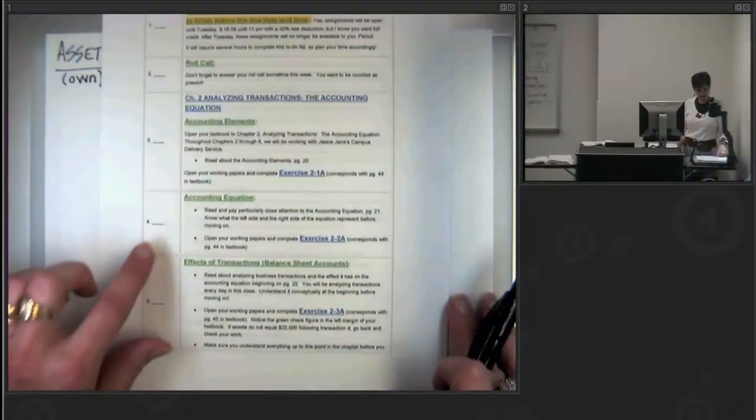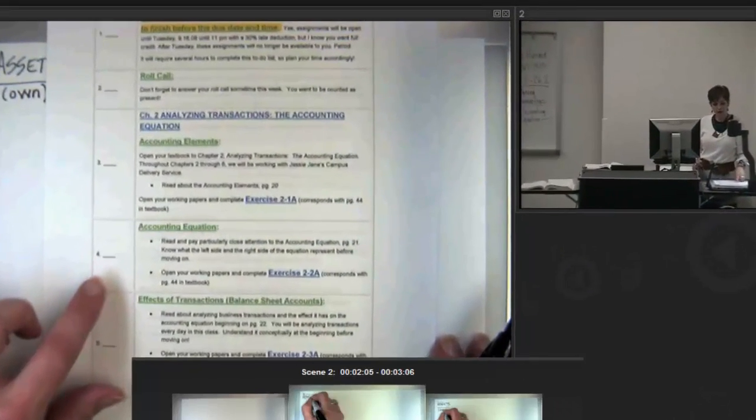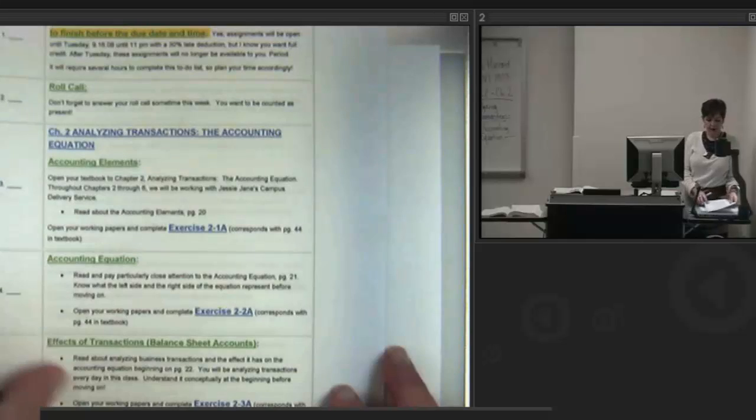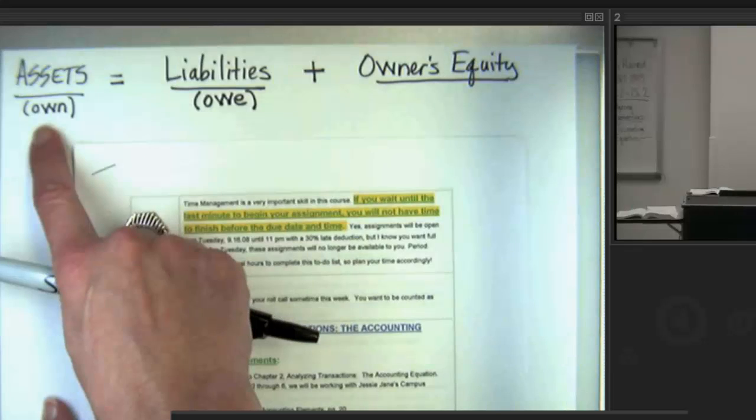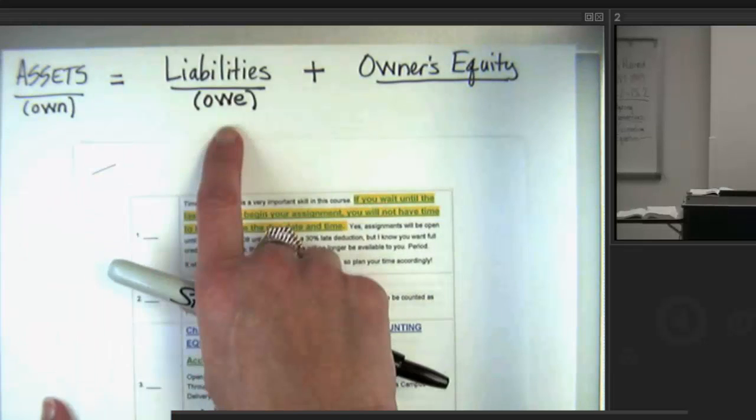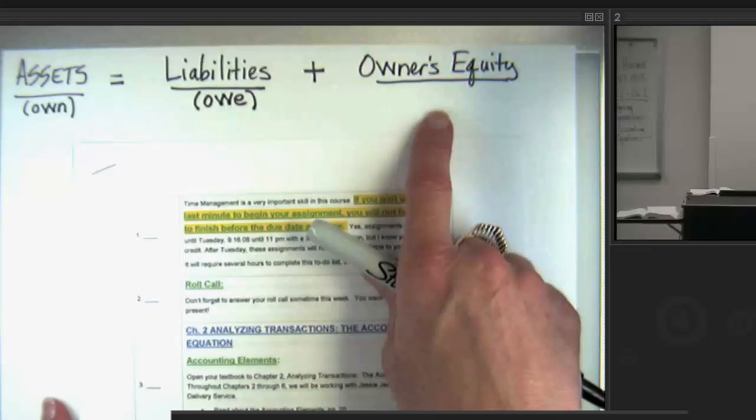Step number four in your weekly to-do list talks about your accounting equation. We've just gone over your accounting equation. Here it is. It's written at the very top of the page here. Assets are the things that you own, and they equal the things that you owe plus your investment in the business.